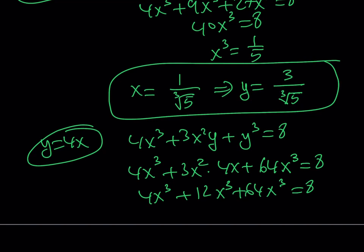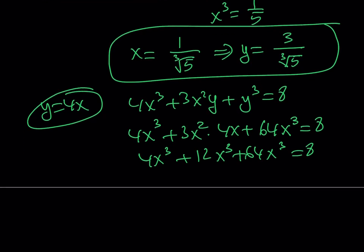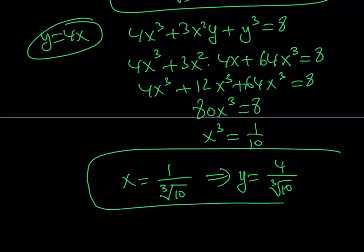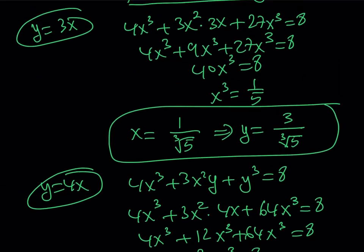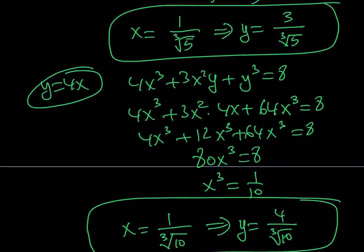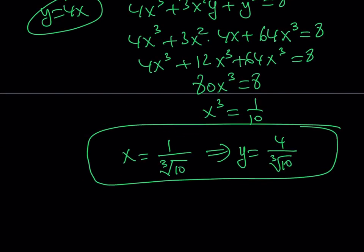This should be 4x³ + 12x³ + 64x³ = 8. Again, the result is always 8. 4 + 12 is 16, 16 + 64 is 80. So 80x³ = 8, which means x³ = 1/10. If you cube root both sides, you get x = 1/∛10. Beautiful. And we know y = 4x, so if you multiply this expression by 4, you find the y value. So these are the solutions. We have (1, 1), (1/∛5, 3/∛5), and (1/∛10, 4/∛10). Those are all the solutions.